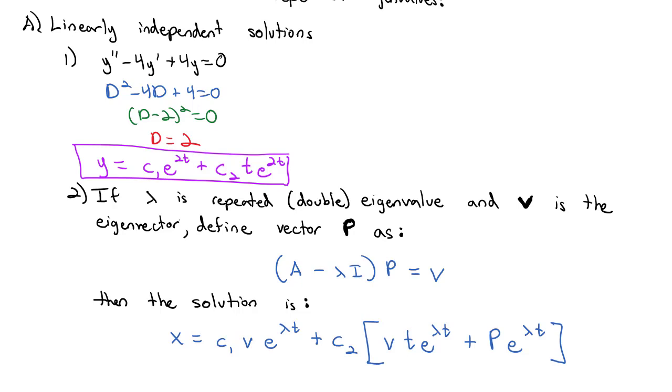This will probably make more sense with an example, so let's do two examples together. Let's do x prime equals negative 4x minus y, and y prime equals x minus 2y.